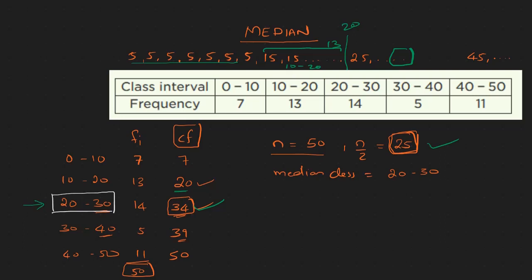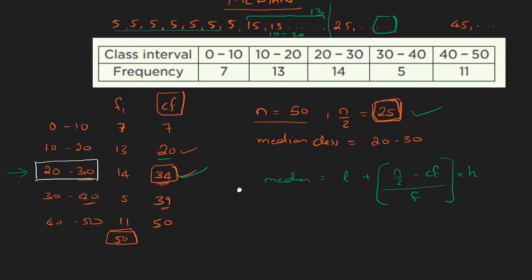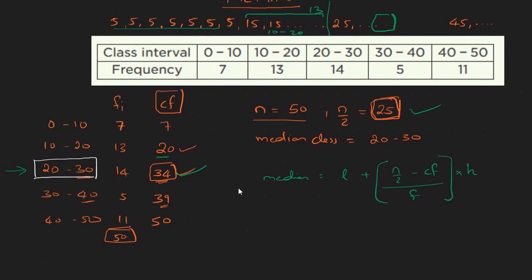Now the formula is: median equals l plus n by 2 minus cf, divided by f, the whole multiplied by h. Here, l is the lower limit of the median class, which is 20. The class size h is equal to 10.